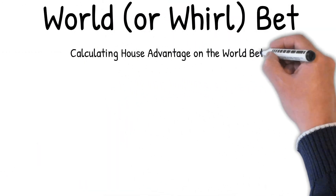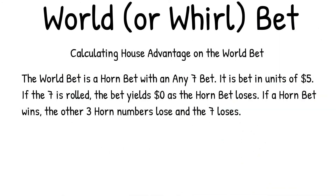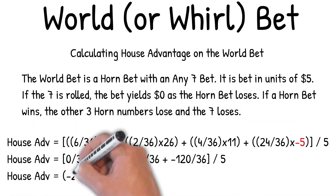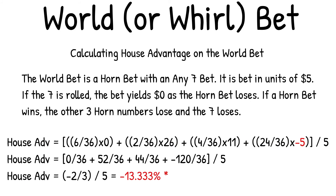Calculating house advantage on the World or Whirl bet: the World bet is a Horn bet with an Any Seven bet, placed in units of five dollars. If the seven is rolled, the bet yields zero dollars as the Horn bet loses. If a Horn bet wins, the other three Horn numbers and the seven lose. House advantage equals six out of 36 times zero for Any Seven, plus two out of 36 times 26 for the two or twelve, plus four out of 36 times 11 for the three or eleven, plus 24 out of 36 times minus five for all other rolls. Add those together, divide by five: zero + 52 + 44 minus 120 out of 36, divided by five, equals minus two-thirds divided by five, equals minus 13.333% house advantage.